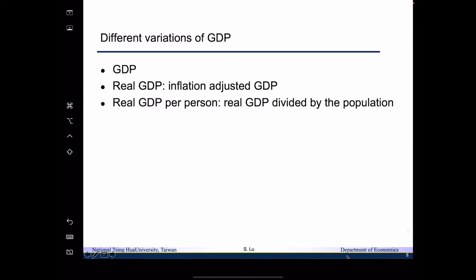To tell us how well an economy performs over time, we need to introduce the concept called real GDP — the inflation-adjusted GDP. The reason we need an inflation-adjusted GDP is that GDP is defined as the market value of final goods and services produced within a country's border during a specific period. If prices vary over the years, GDP will differ even if the quantity of goods produced is exactly the same. So we introduce real GDP to ensure that any GDP increase reflects changes in quantity, not just price increases.